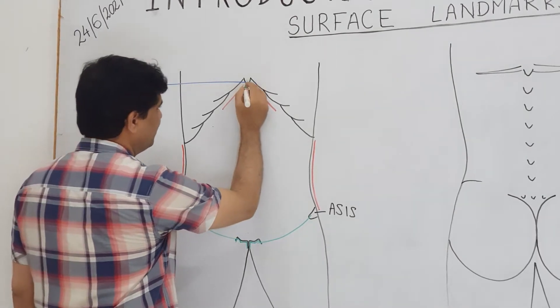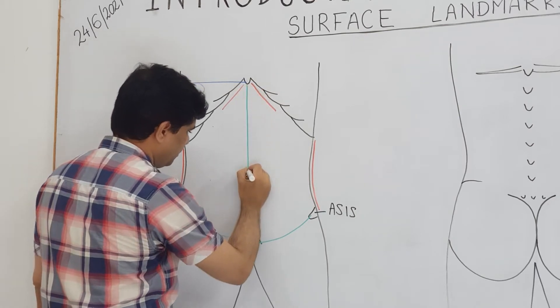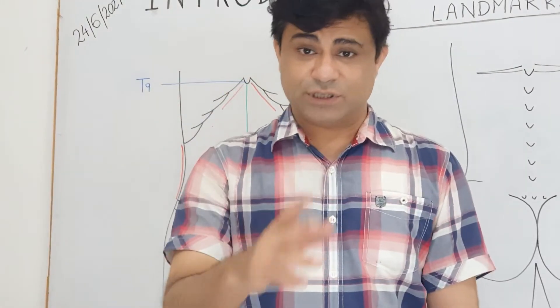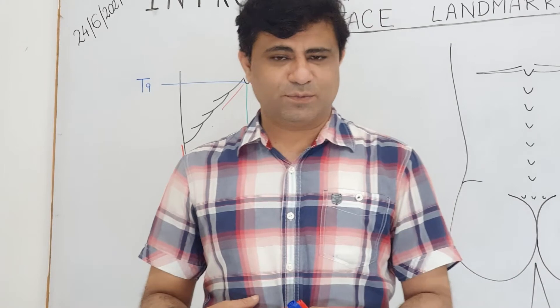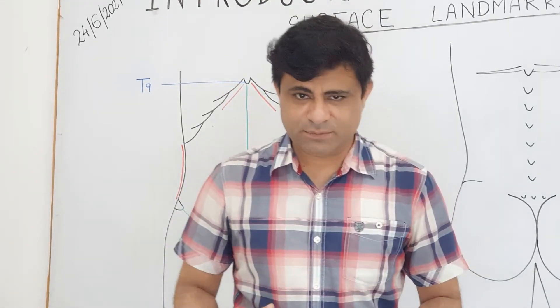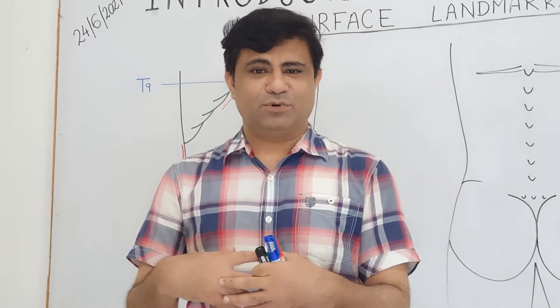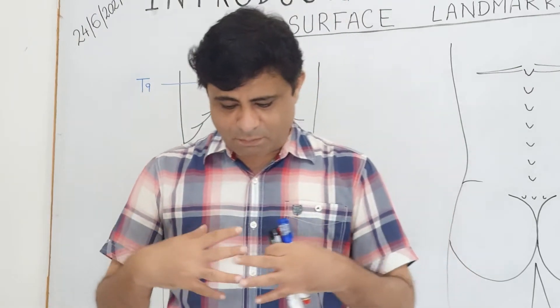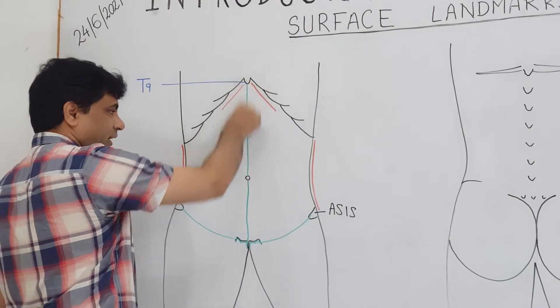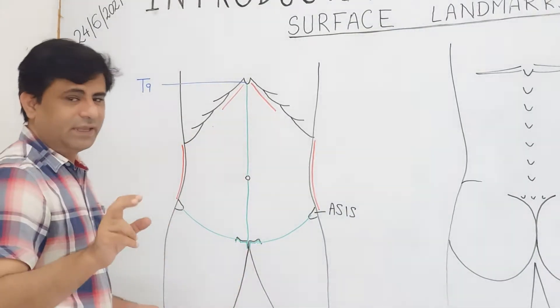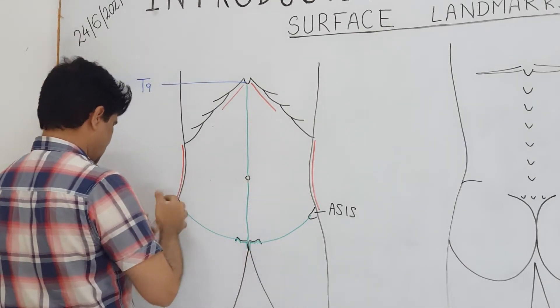In the midline, right from the xiphoid process, passing through the umbilicus and reaching down to the pubic symphysis, there is a median line which is avascular. The three muscles of the anterolateral abdominal wall - external oblique abdominis, internal oblique abdominis, and transverse abdominis - have aponeurotic expansions anteriorly that cover the rectus abdominis in the midline to form the rectus sheath. The rectus sheath blends and decussates in the midline, and being fibrous tissue it is avascular and whitish. That is why it is called linea alba.